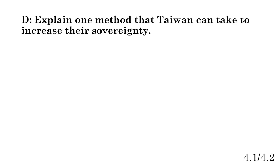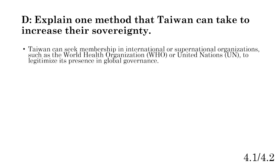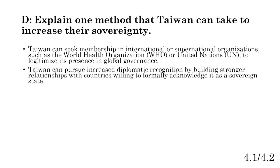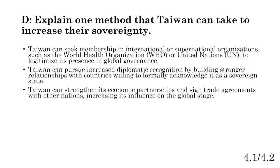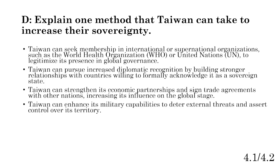Part D: explain one method Taiwan can take to increase sovereignty and seek membership in international organizations. Taiwan can pursue diplomatic recognition by building relationships with countries that recognize it as a state. They can strengthen economic partnerships and sign trade deals to raise their global influence. They can also enhance military capabilities to eliminate threats to their territory and sovereignty, since sovereignty requires no external pressure over government, political decision-making, or the people and resources within a country.